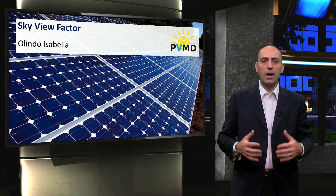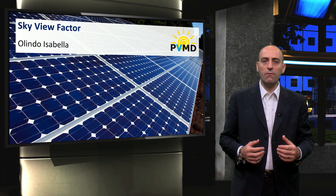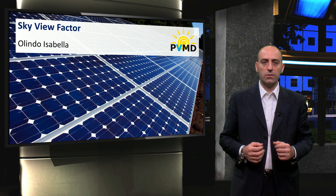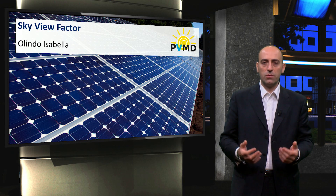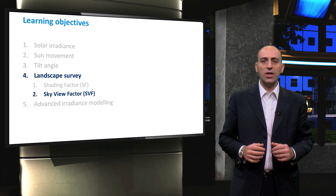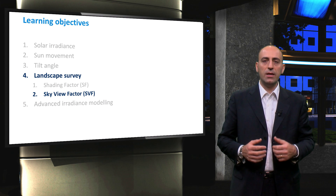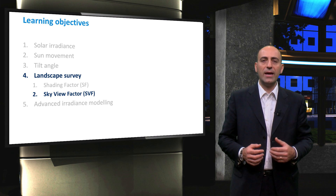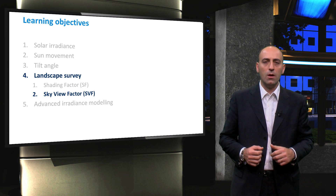In the previous video, we learned how to calculate the shading factor when the surrounding environment of the PV system is considered. In this video, we will learn how the surrounding environment affects the SkyView factor. The learning objectives include understanding the importance of the SkyView factor, or SVF, in irradiance modeling, followed by a method to determine it when the surrounding environment of the PV system is included.